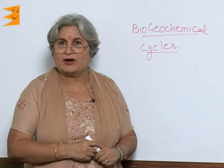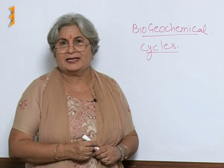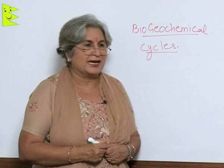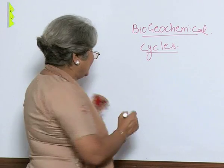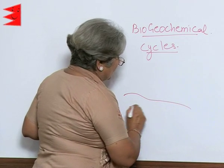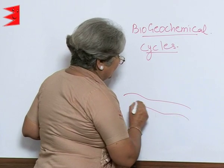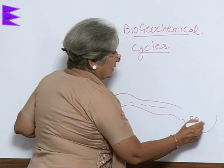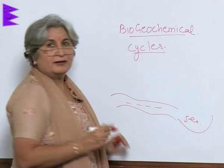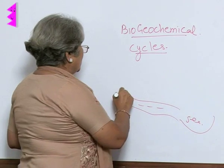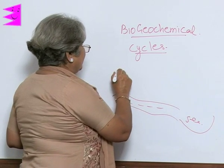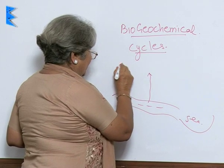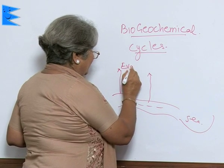First, let us look at what happens in the case of the water cycle. From sources of water like rivers, seas, and other water bodies, water is constantly evaporating. So there is evaporation.